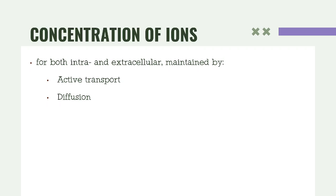The concentration of ions — whether intracellular or extracellular — is maintained by different transport mechanisms. There are active transport and passive transport, under which we have diffusion. The main difference between the two is the requirement of energy: active transport requires energy, while passive transport does not.